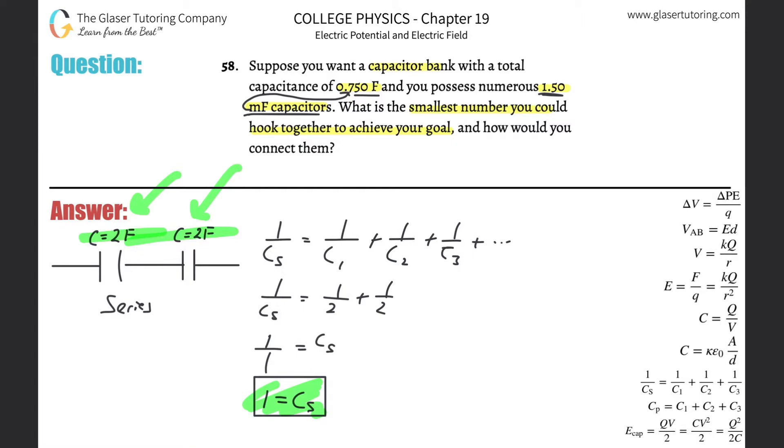When you connect them together, the total basically goes down. If these two were in parallel with one another, watch - let's draw something like this.